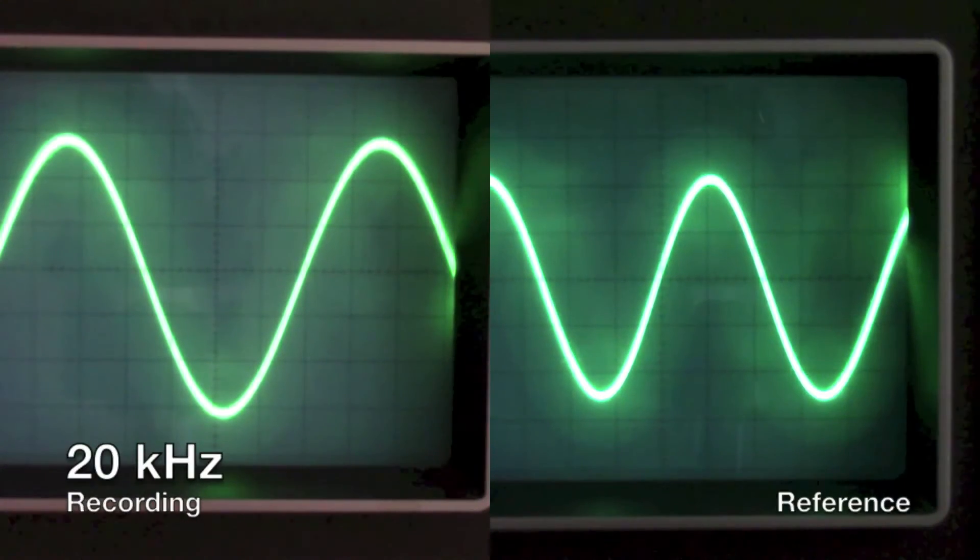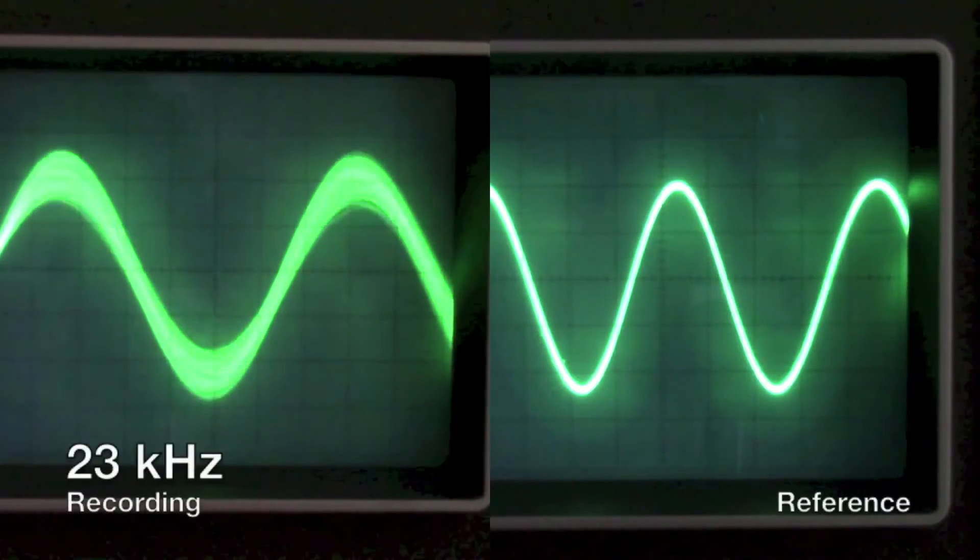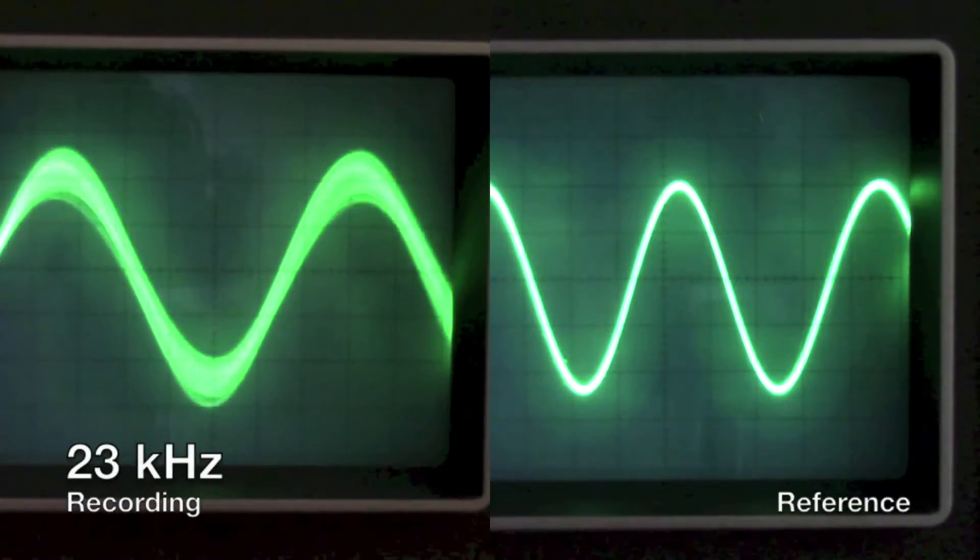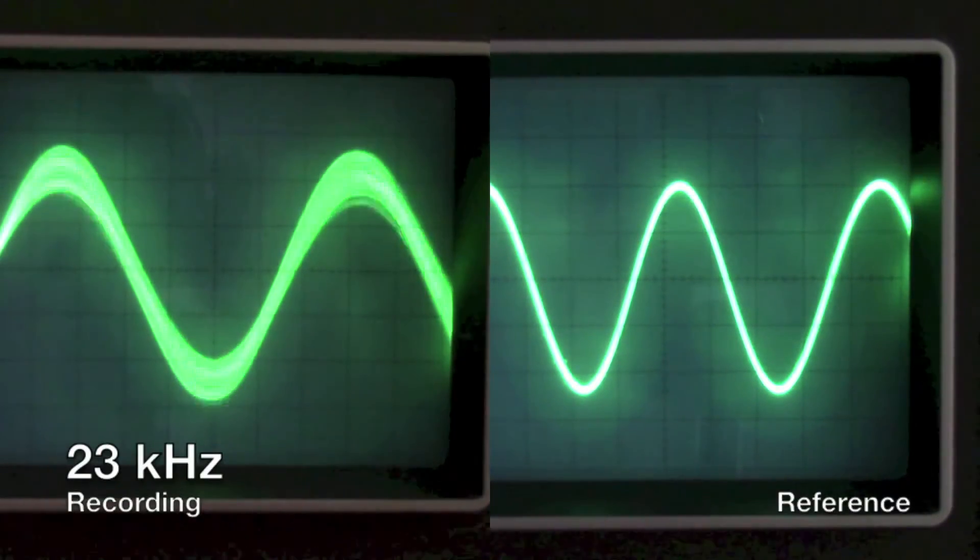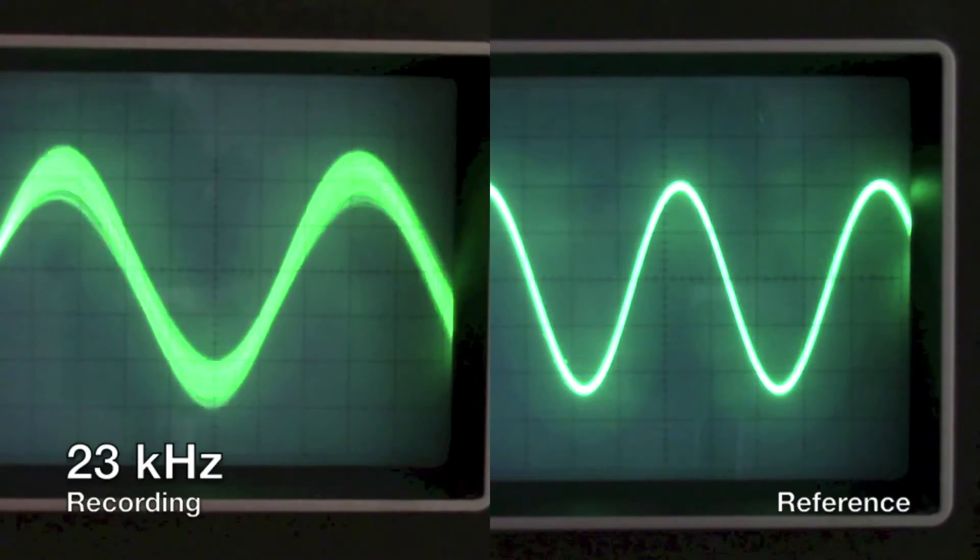Now we are moving on to 23 kHz, which is just above the Nyquist frequency. We immediately get heavy distortion.